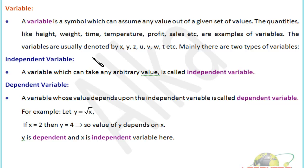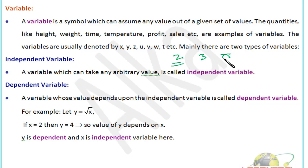Next are variables and constants. We have been studying these terms since fourth, fifth, and sixth grade. A constant is a number whose value cannot be changed. For example, 2, 3, π — the value of all these is constant. You cannot say two is any other number; similarly π is always π. These are constants.